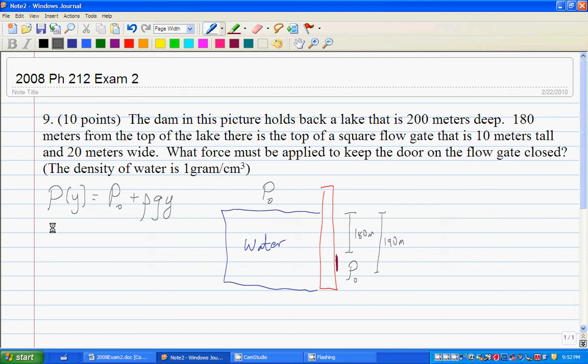We also remember that force is equal to pressure times area. But in this case, the deeper we get, the more pressure it is. So simple multiplication isn't going to work. We're going to have to integrate. You might be tempted to try to take the average of 180 and 190 meters. That won't work. And I'll show you why in a second.